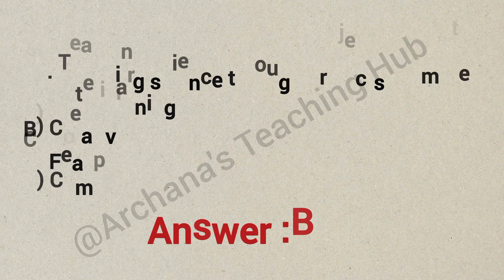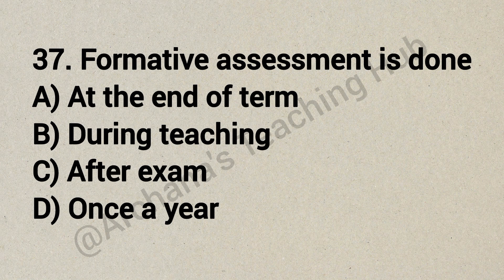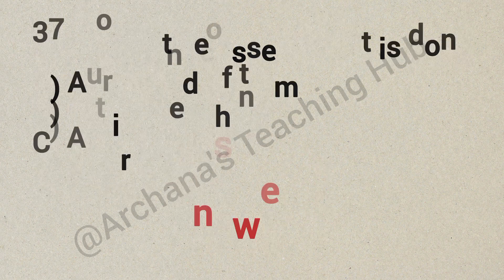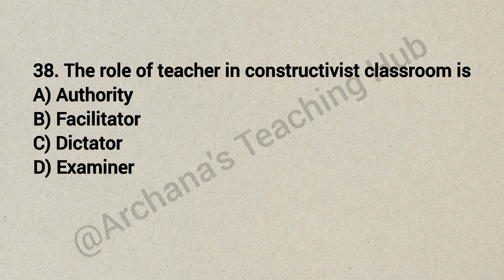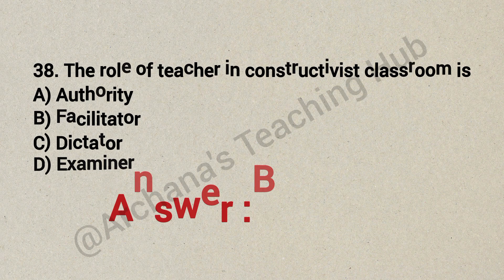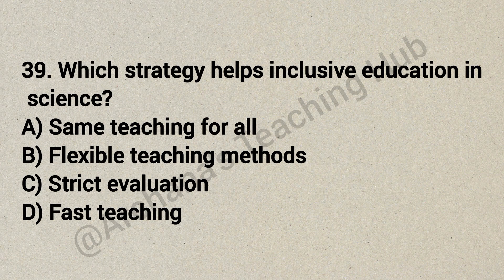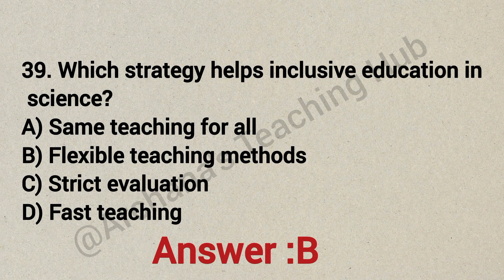Question 37: Formative assessment is done — Option A: at the end of term, Option B: during teaching, Option C: after exam, Option D: once a year. Correct answer is Option B: during teaching. Question 38: The role of a teacher in a constructivist classroom is — Option A: authority, Option B: facilitator, Option C: dictator, Option D: examiner. Correct answer is Option B: facilitator. Question 39: Which strategy helps inclusive education in science? Option A: same teaching for all, Option B: flexible teaching methods, Option C: strict evaluation, Option D: fast teaching. Correct answer is Option B: flexible teaching methods.